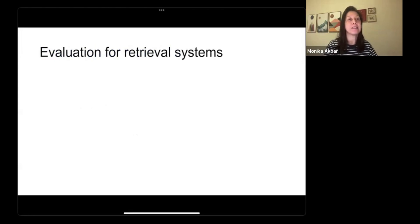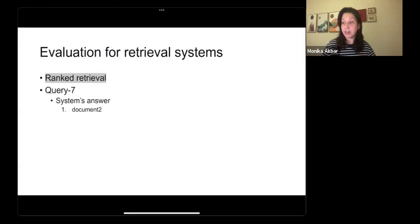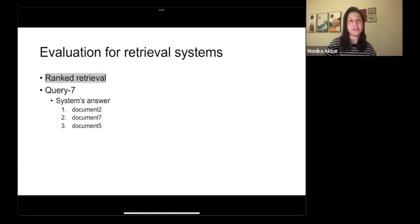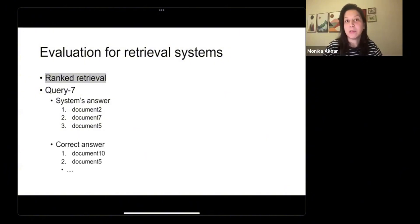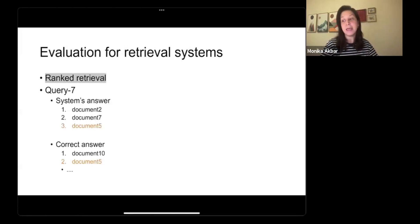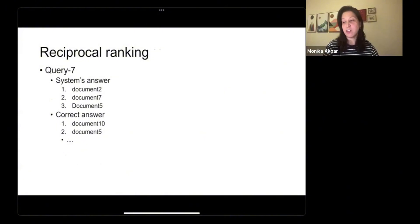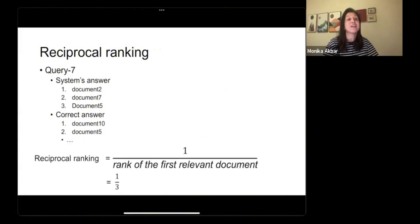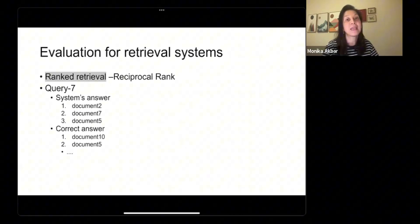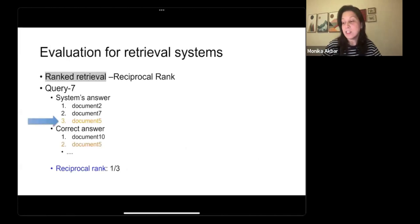Let's assume that we have developed a retrieval system that returns document 2 as the first result, then document 7, and then document 5, in response to query 7. In our ground truth dataset, for the same query, the expected correct answers are document 10 and document 5. Document 5 is one of those correct answers and it shows up in the third position in our ranked list. So the reciprocal rank for this query would be 1/3, because the first correct document was found at rank 3 of the returned list.